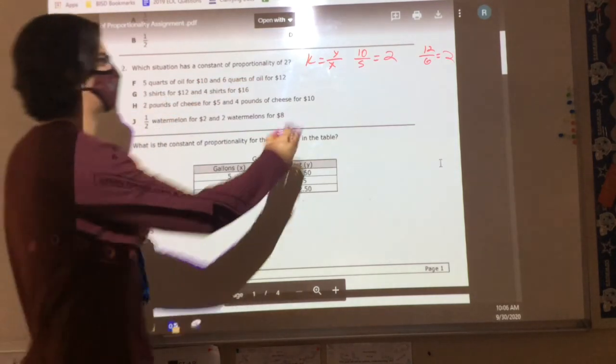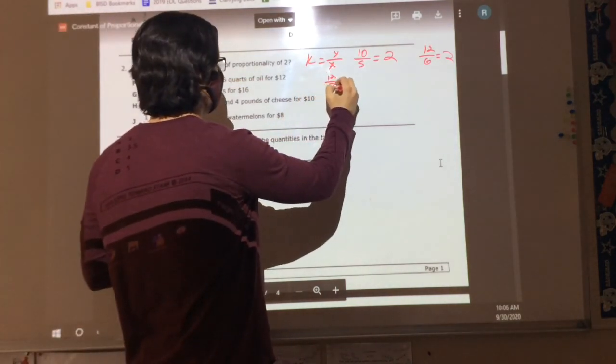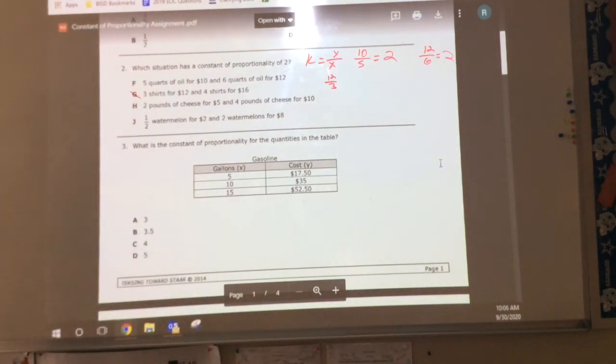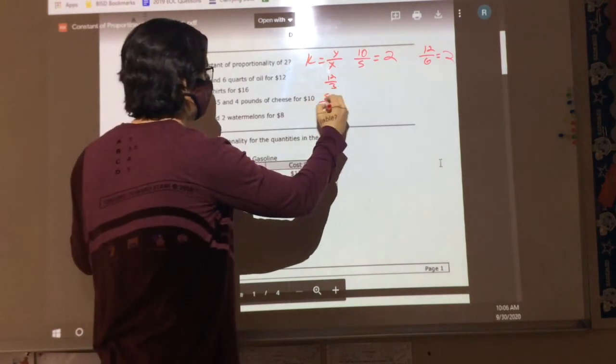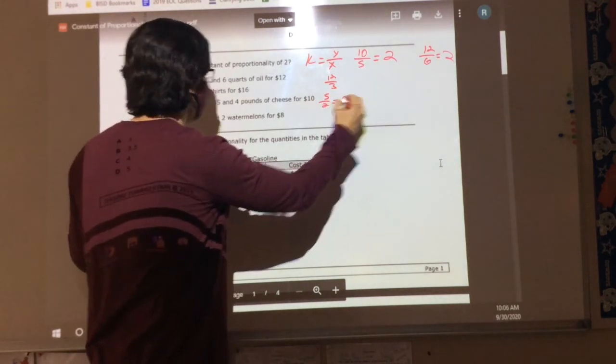What if I do 12 over 3? What does that equal? 4. Well, then it can't be G. What if I do 5 over 2? 2. 2.5. 2.5, so that doesn't work.